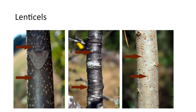Here are some photos of lenticels. You can see really round ones on the far left, ones that are stretched a little bit on the right, and ones that are very stretched on the black cherry tree in the center.